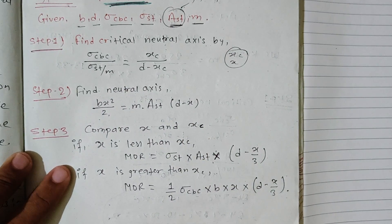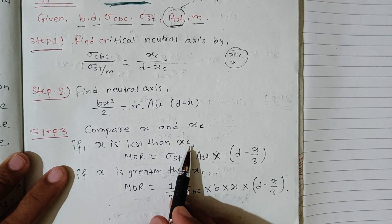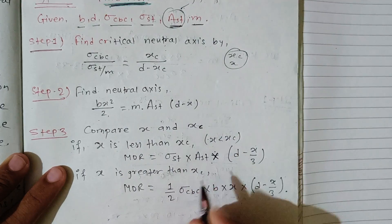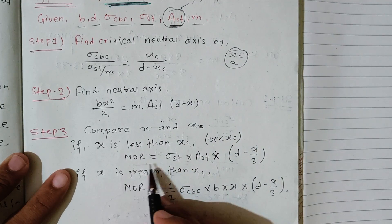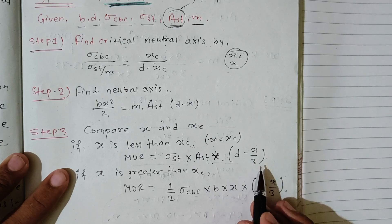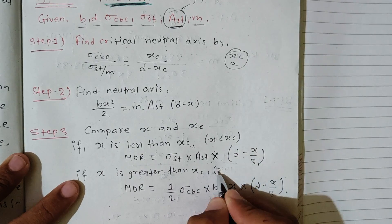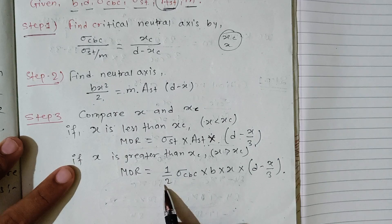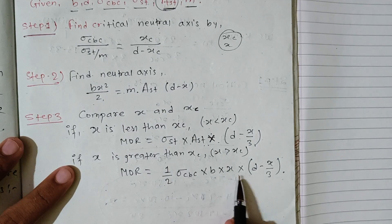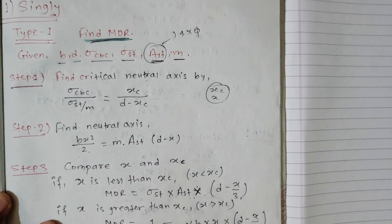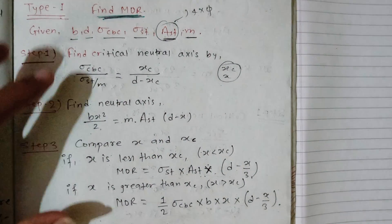Compare x and xc. If x is less than xc, the moment of resistance equals sigma st into Ast into (d minus x by 3). If x is greater than xc, the moment of resistance equals one half times sigma cbc into b into x into (d minus x by 3).